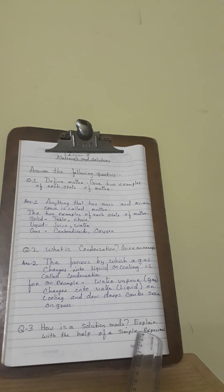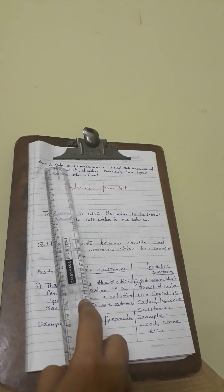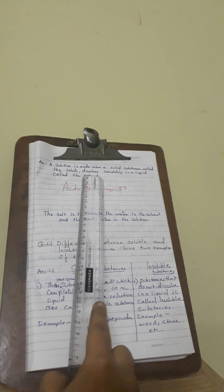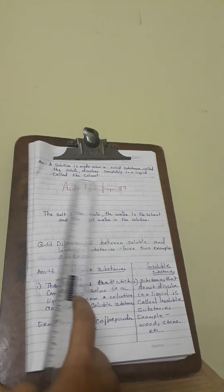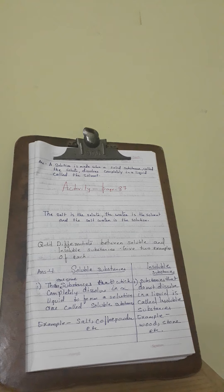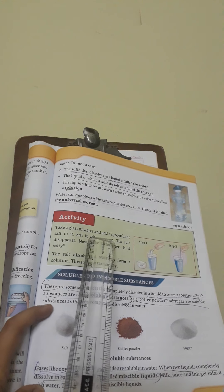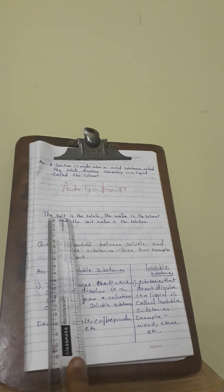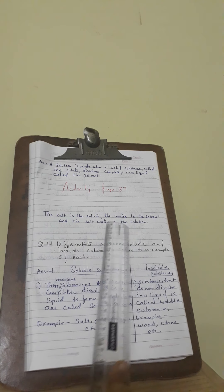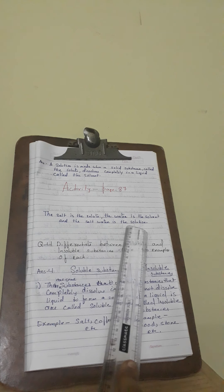Coming to the third question: how is a solution made? Explain with the help of a simple experiment. A solution is made when a solid substance called the solute dissolves completely in a liquid called the solvent. The activity is on page 87 — you will write that activity. Then write: the solid is the solute, the water is the solvent, and the salt water is the solution.